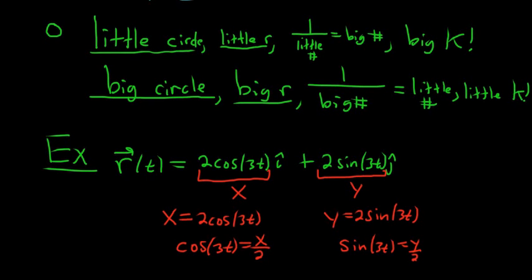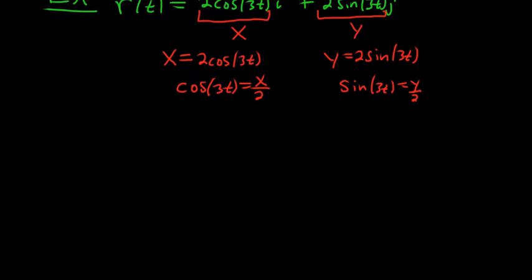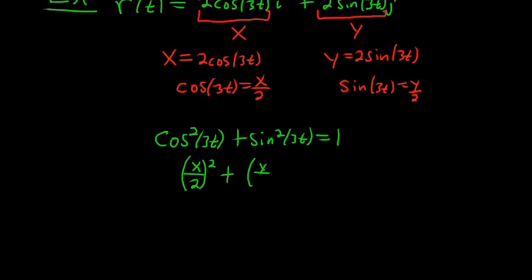Then we can use one of the most famous theorems from trigonometry: cosine squared plus sine squared equals 1. So we have cosine squared 3t plus sine squared 3t, and that's equal to 1. But cosine 3t is x over 2, so this is x over 2 quantity squared plus y over 2 quantity squared.